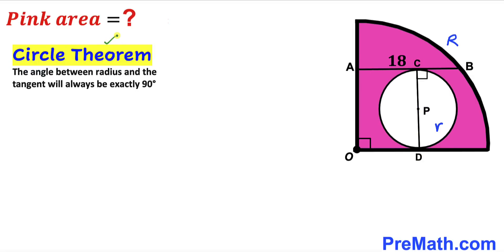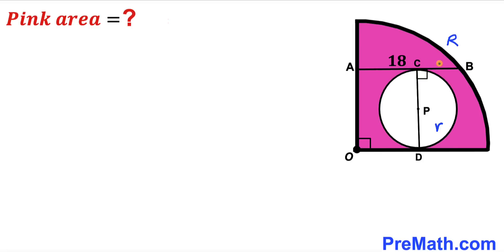Let's recall the circle theorem: the angle between the radius and the tangent line will always be equal to 90 degrees. So this angle has to be 90 degrees, since AB is our tangent line and CP is the radius.